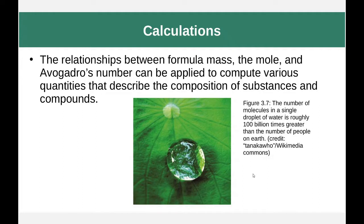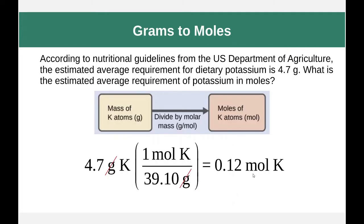Let's do some calculations relating mass, moles, and Avogadro's number. According to USDA nutritional guidelines, the estimated average requirement for dietary potassium is 4.7 grams. What is that in moles? We start with 4.7 grams, look up potassium in the periodic table — 39.1 AMU, which equals 39.1 grams per mole. We put grams in the denominator to cancel, leaving moles in the numerator, and we get 0.12 moles of potassium.